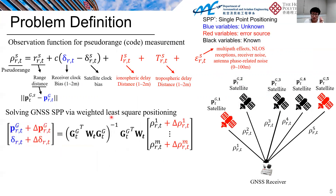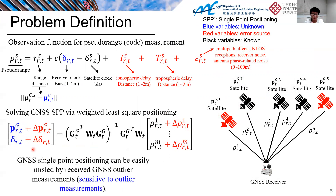However, if we have a corrupted satellite — represented in red — it represents an impure signal, for example a multipath signal from building reflection. We get an additional delay, meaning additional bias to the pseudorange measurement, and as a result the state estimation is biased. In other words, GNSS single-point positioning can be easily misled by GNSS outliers, meaning multipath signals. The single-point positioning is sensitive to outlier measurements because it only considers measurements in a single epoch.